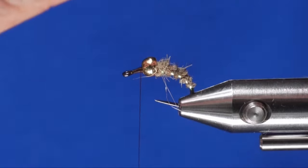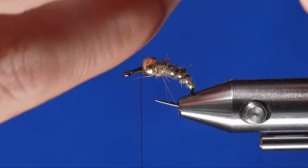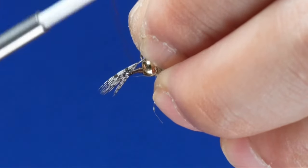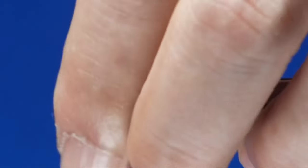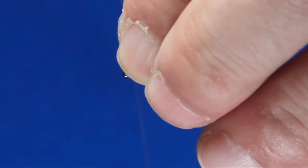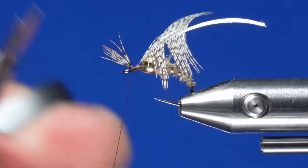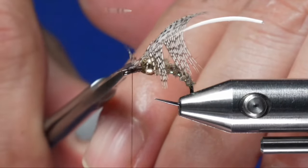I'm going to take my hackle, which is Hungarian partridge, and tie it in. And then be careful when you trim it that you don't cut your thread or the hackle.